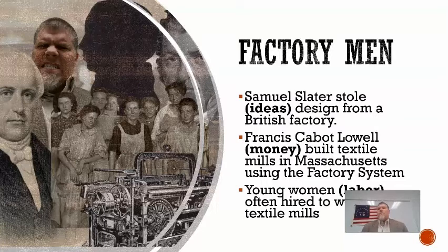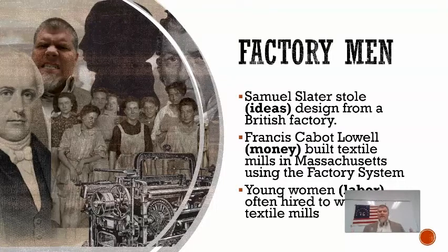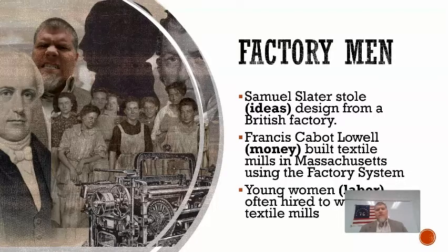Slater came to the United States and started setting up factories here. Francis Cabot Lowell was really one of the first people to get the factory system going in the United States in an innovative way. He sold shares in his business for a thousand dollars each, so people could own a part of the business. This allowed him to generate the money needed to build the business, with investors becoming part owners along with partners and family members.